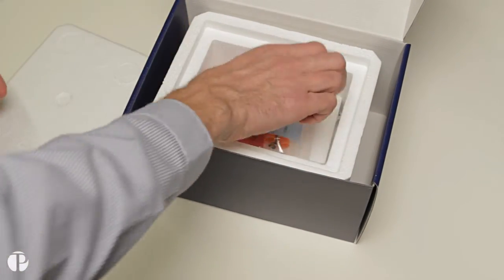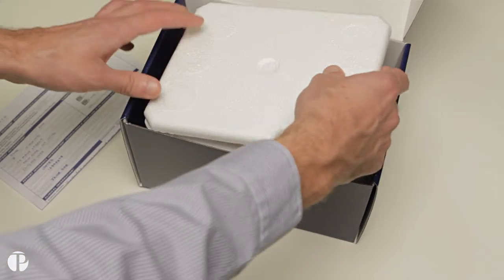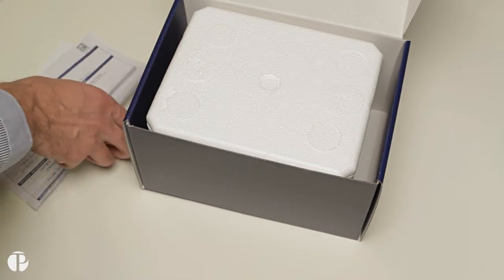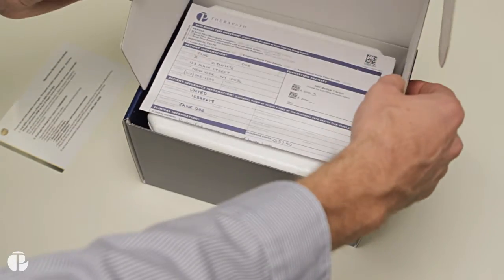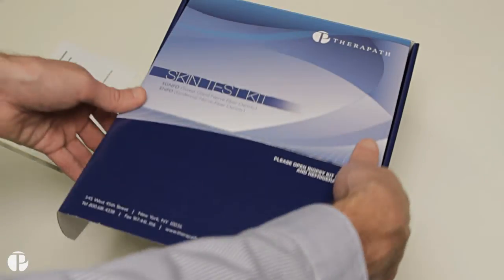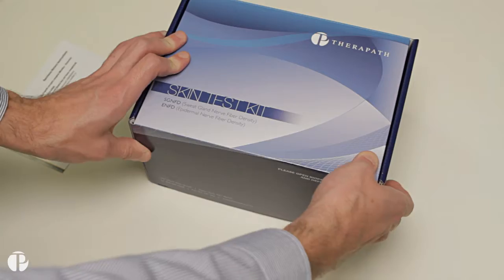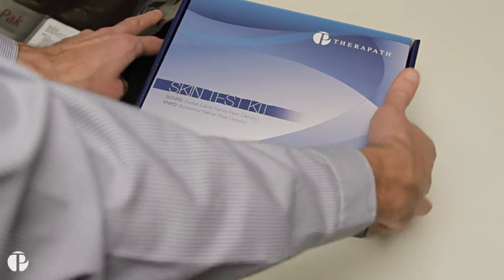Place the biohazard bag containing the sample vials on top of the barrier and cover the cooler. Place the cooler inside the kit box. Add the completed requisition form and any additional paperwork on top of the cooler. Close and secure the box and place it inside the pre-labeled shipping pack.